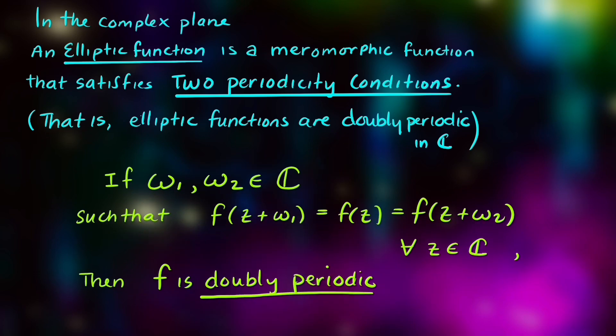If omega_1 and omega_2 are complex numbers, such that f of z plus omega_1 equals f of z, as well as f of z plus omega_2 equals f of z, for all z in the complex plane, f is doubly periodic, and omega_1 and omega_2 are called the two periods of the function.